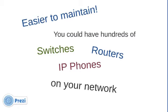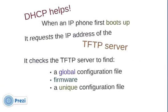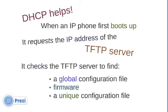Same story with IP phones — you're going to have hundreds of IP phones on your network. DHCP helps. When an IP phone first boots up, it goes to a DHCP server and gets its IP address, subnet mask, and default gateway, and then it requests the IP address of the TFTP server.